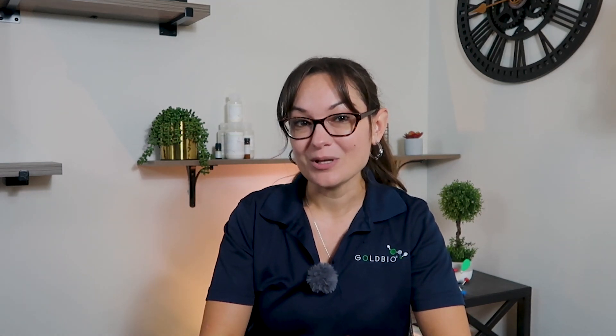What makes this even more confusing is that sometimes different words are used to describe each one. Supercoiled DNA is also known as covalently closed circular DNA. Imagine a rubber band twisted up on itself multiple times — this is the most compact form of plasmid DNA, commonly found in living bacterial cells. Supercoiled DNA is very space-efficient and migrates quickly during gel electrophoresis.